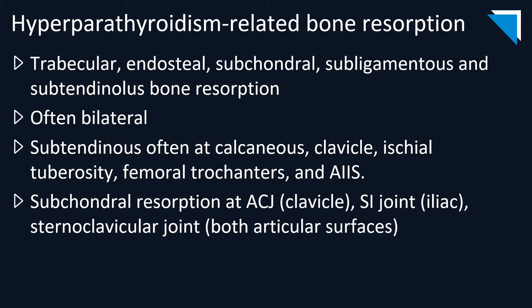Hyperparathyroidism-related bone resorption can actually occur practically anywhere in bones, including trabecular, endosteal, subchondral, and even subligamentous and subtendinous areas. It is usually bilateral and in many cases fairly symmetric. Example locations for subtendinous resorption include the calcaneus, ischial tuberosities, and femoral trochanters. Subchondral resorption can occur at the acromioclavicular joint involving the clavicular side, the sacroiliac joints where there is more involvement of the iliac aspect, and the sternoclavicular joints where both articular surfaces are typically involved to fairly equal severity.